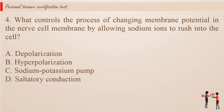Question 4. What controls the process of changing membrane potential in the nerve cell membrane by allowing sodium ions to rush into the cell? a. Depolarization. b. Hyperpolarization. c. Sodium-potassium pump. d. Saltatory conduction.